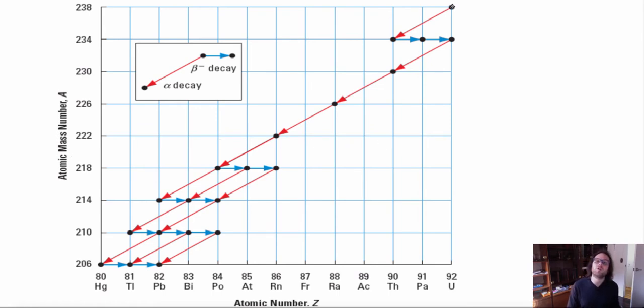So if we look up here, we are starting with 92 protons and 238 nucleons. So that means we are using uranium-238. Now uranium-238 is unstable, so it is going to go through an alpha decay, where we lose either an alpha particle or helium, which is essentially the same thing. So then, when we lose that alpha particle, we end up at thorium-234.